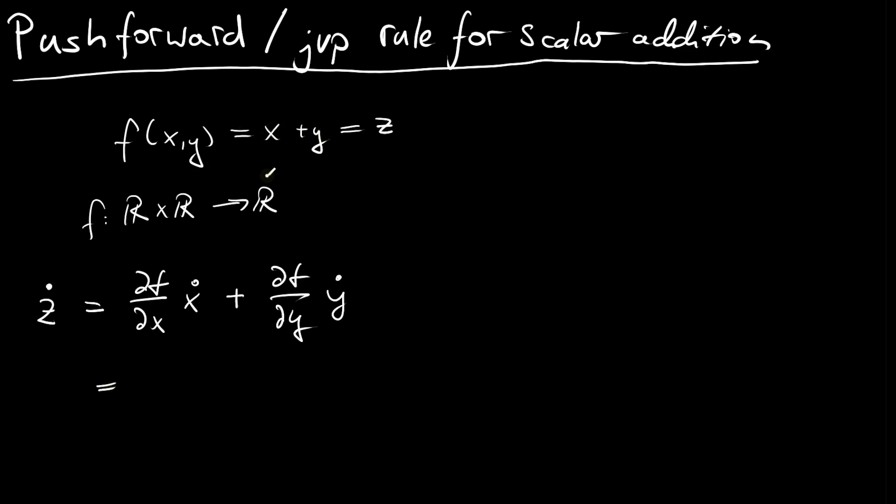If we derive x plus y with respect to x this will just be 1 and then multiply it with x dot plus the derivative with respect to y will be 1 times y dot and hence we will get x dot plus y dot.